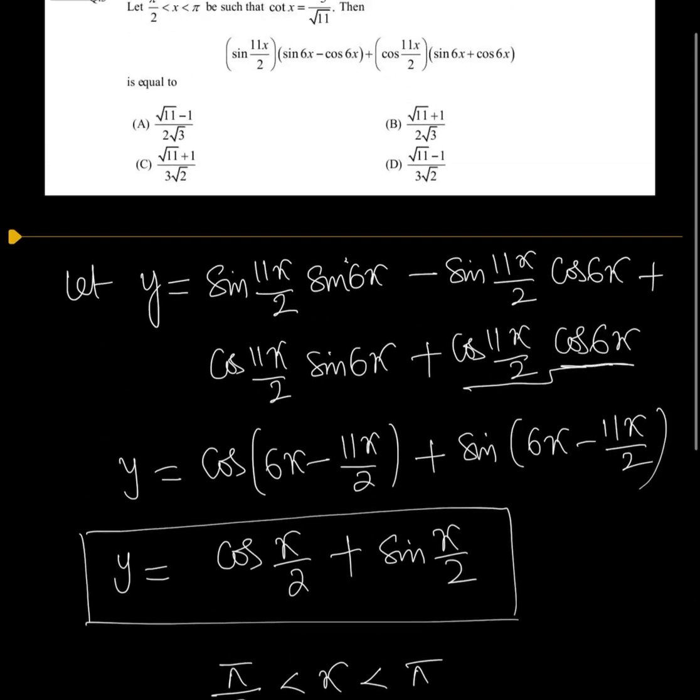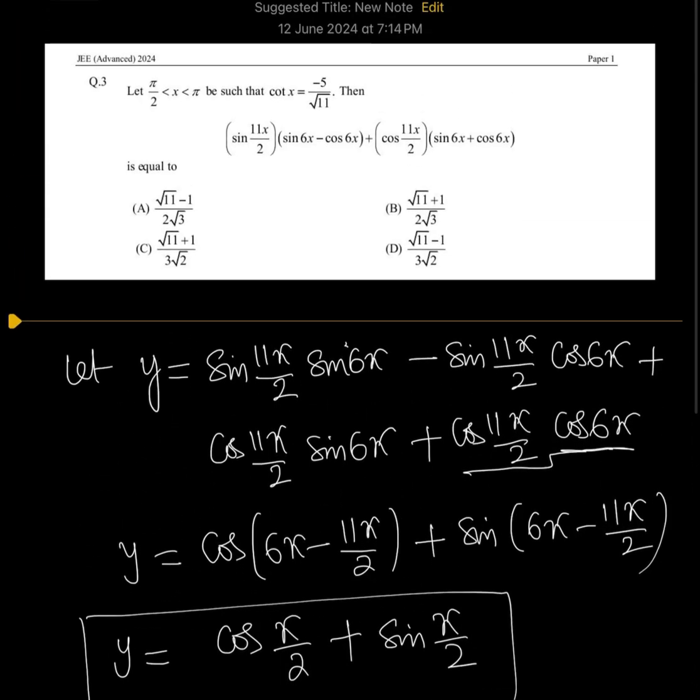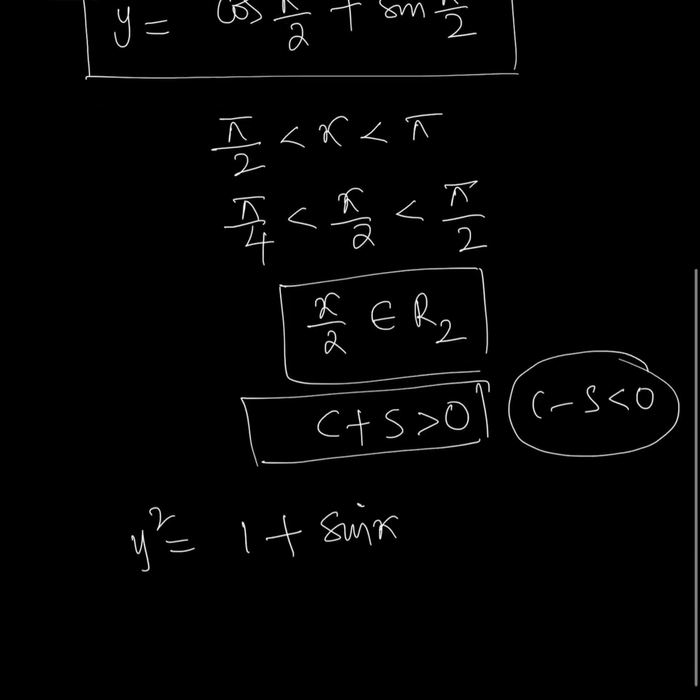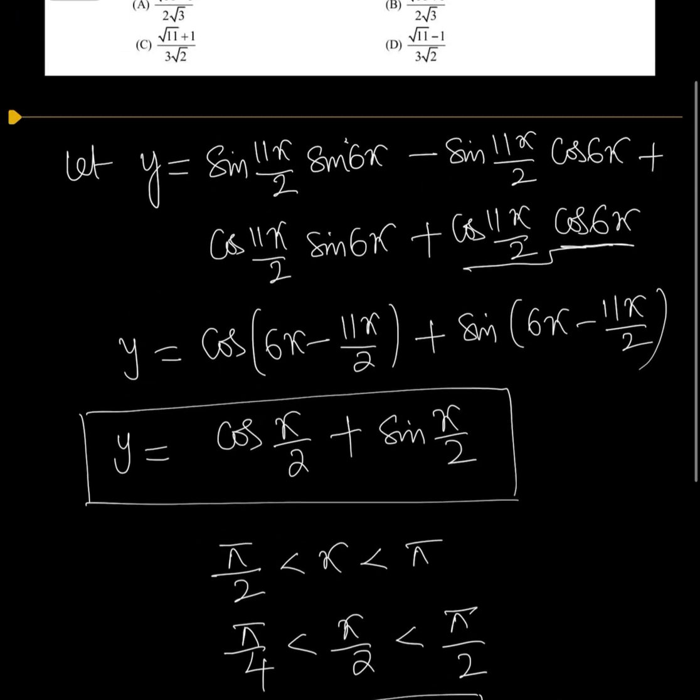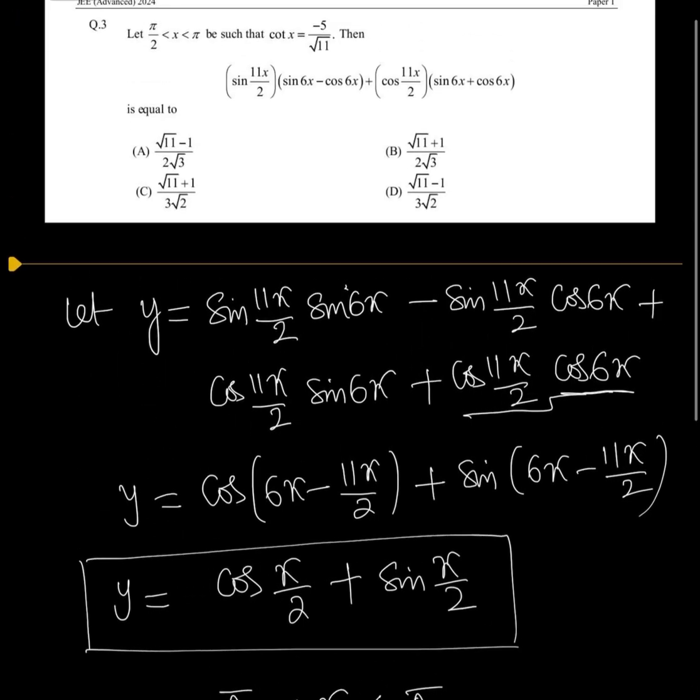We need sin x from the given condition. Since cot x = -5/√11, using a right triangle with sides 5, √11, and hypotenuse 6, and since x is in the second quadrant, sin x is positive, so sin x = √11/6.